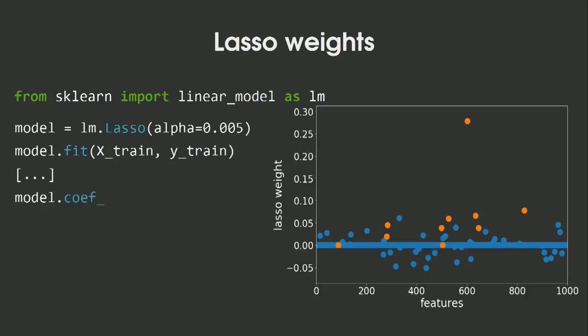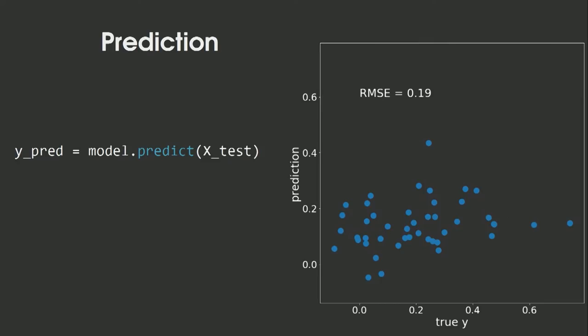Now I apply this method to my data — it's a standard method implemented in scikit-learn. Here's what I get: it's much better. I've picked a few features with non-zero weights that shouldn't be there, and two causal features haven't been picked up, but overall I have high weights on the important features. For prediction, it's slightly better than before: with plain linear regression I had an RMSE of 0.21, and here I have an RMSE of 0.19, though it's still not great.